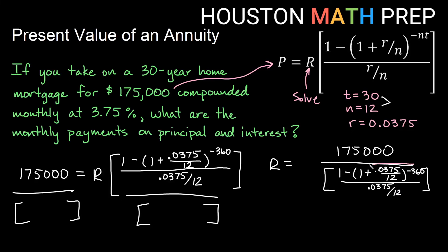Again, I would recommend do this numerator here, then divide by this denominator, and then take 175,000 and divide by everything that you got. Remember not to round at each step. If we type all of that into the calculator correctly and only round at the very end, then we should get principal plus interest, the payment on just that. Each month would be $810.45.